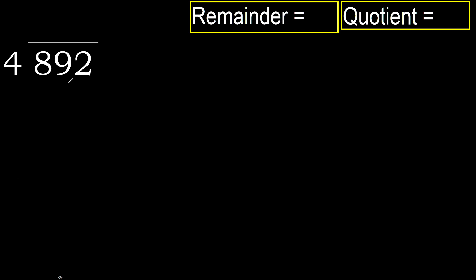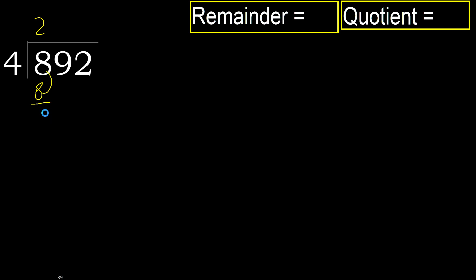892 divided by 4. 8 is not less, therefore with 8: 4 multiplied by which number is nearest to 8 but not greater? 4 multiplied by 3 is 12 — 12 is greater. Multiply by 2 is 8, which is not greater. Subtract: 8 minus 8 equals 0.